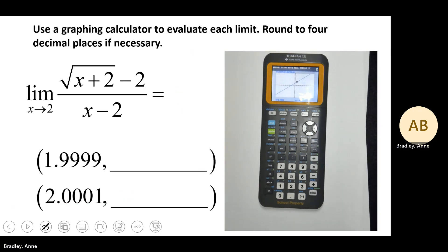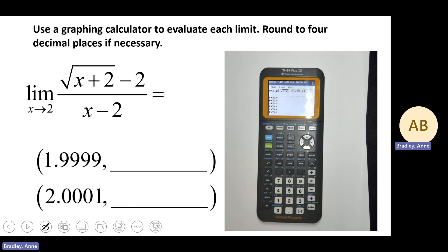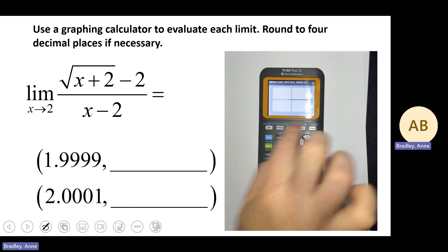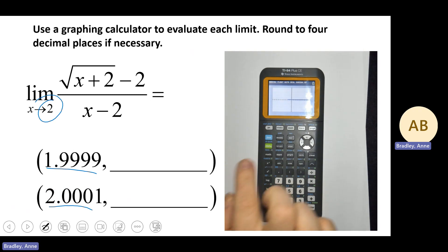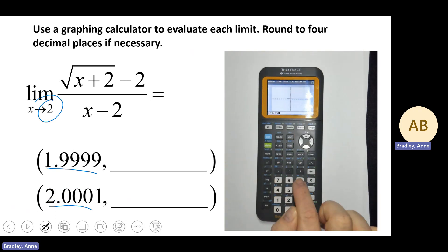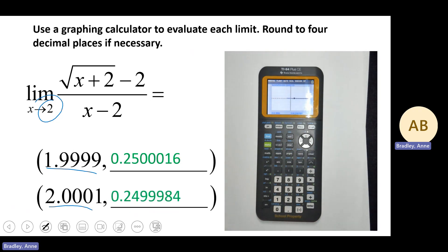Let's look at number 2. I've plugged this into the graphing calculator — notice parentheses in the numerator, parentheses in the denominator, and also parentheses around the radical and the expression inside it; that does make a difference. We're evaluating the limit as x approaches 2, so we go slightly to the left: 1.999, then slightly to the right: 2.0001. We can see it's converging on the same output value of 0.25.